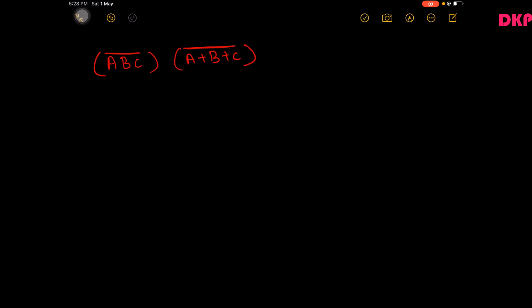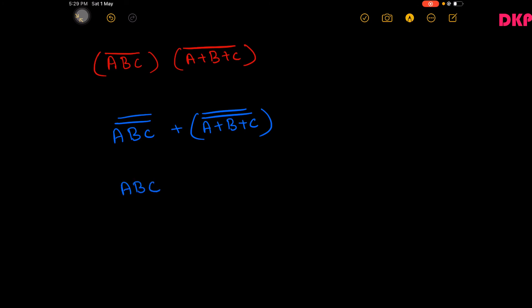Let us do one more example: (abc)̄ · (a+b+c)̄. The first term is (abc)̄, so the complement of abc is a+b+c. The complement of (a+b+c)̄ is abc. Therefore the complement of the whole expression (abc)̄ · (a+b+c)̄ is (a+b+c) + abc. This is the complement of the given expression.